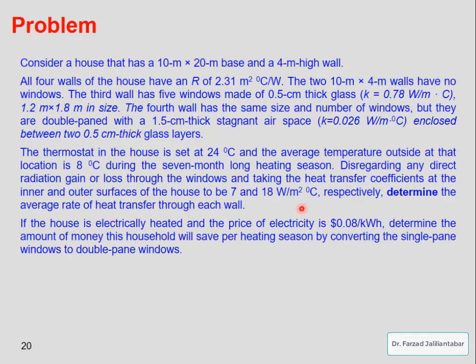We are going to determine the average rate of heat transfer through each wall. Then, since the house is electrically heated and the price of electricity is 0.08 dollar per kilowatt hour, we will determine the amount of money saved per heating season by converting the single pane windows to double pane windows. The heat transfer through these two types of windows will be different, so let's see how we can solve this problem.